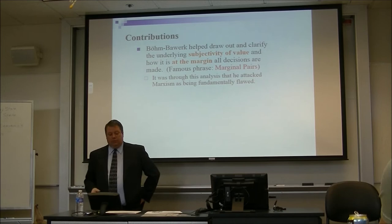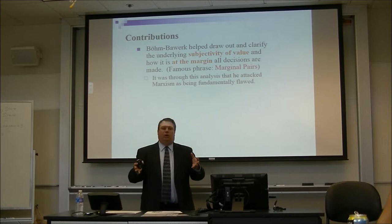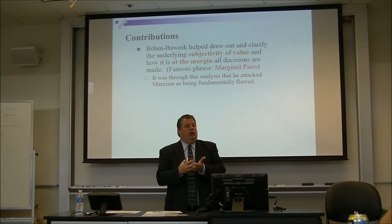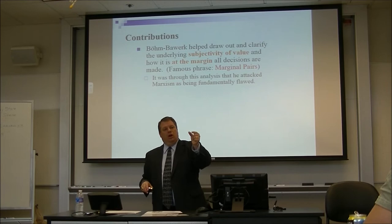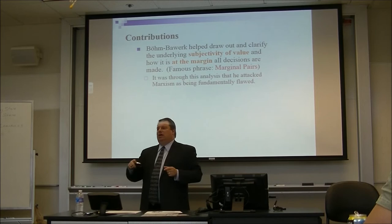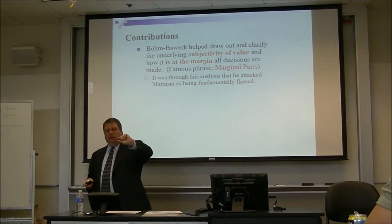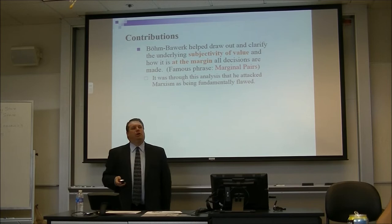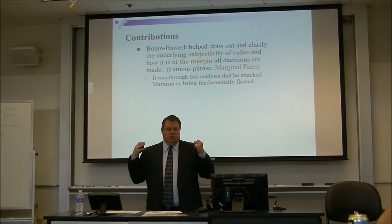Böhm-Bawerk helped draw out and clarify the underlying subjective value theory. He showed how all decisions are made at the margin. He gives an example of a horse trading market, and the famous phrase that comes out of this is the 'marginal pairs' — who is the last buyer and who is the last seller before no one else is willing to trade? That is the marginal pair, and based on the marginal pair the price will fall within the discrepancy between that last buyer and last seller. He was using discrete units rather than continuous curves, allowing negotiation to set that final price between the two marginal pairs.